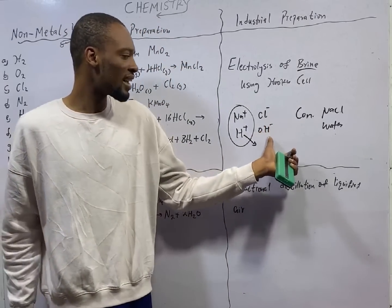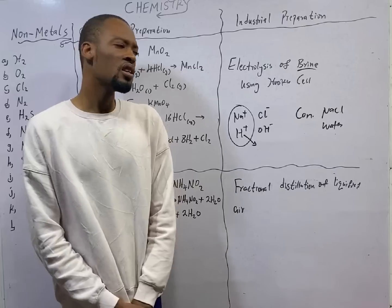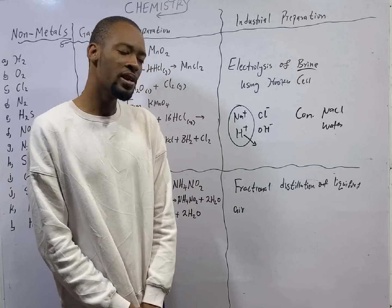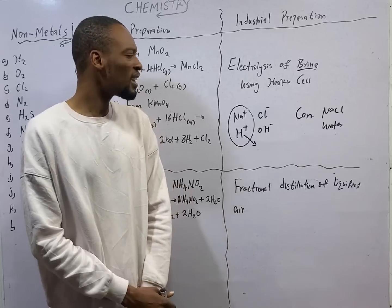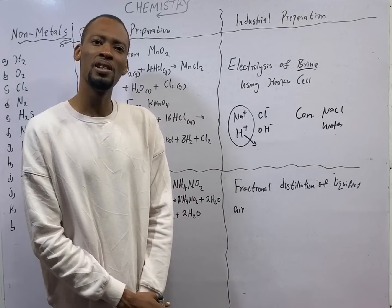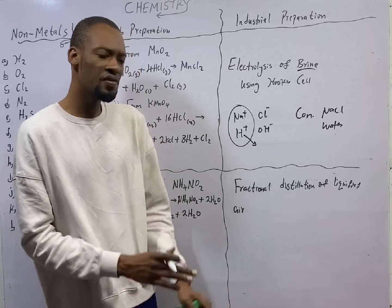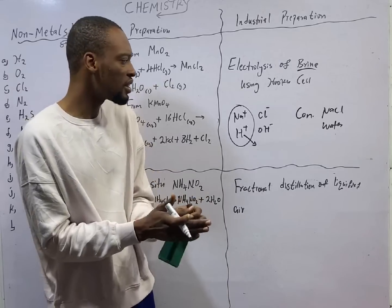But for chloride ion and hydroxide ion, concentration will play a role because they are closer in the series. The one that is more concentrated will be discharged preferentially if the distance between them is very close.